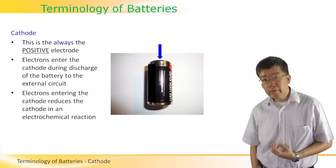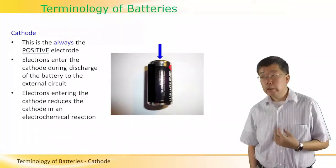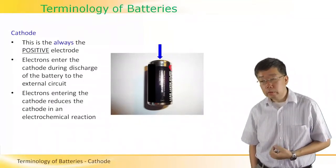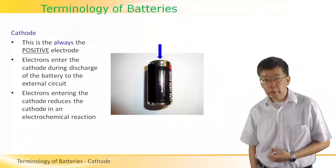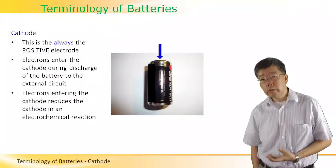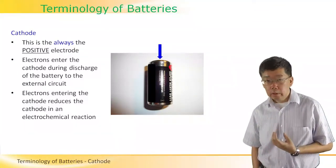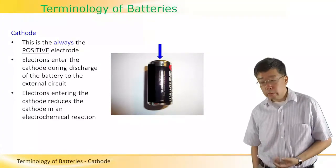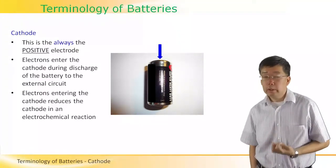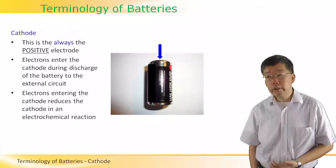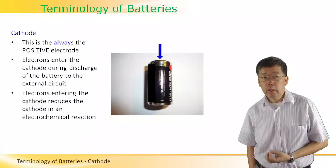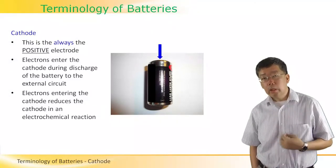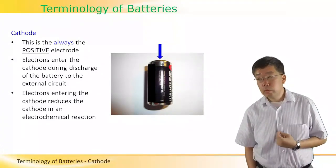The positive electrode will attract electrons, so electrons will always enter the cathode during the discharge of the battery. In other words, when we use the battery to power some device in a circuit such as a cell phone, the electrons will enter the cathode and reduce the material in the cathode in an electrochemical reaction.